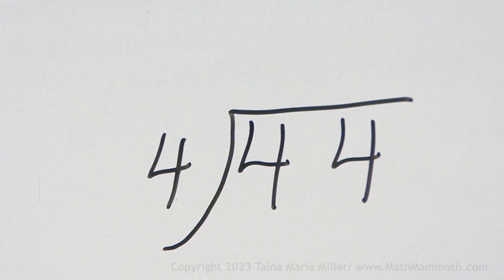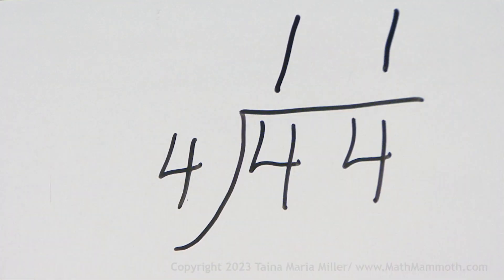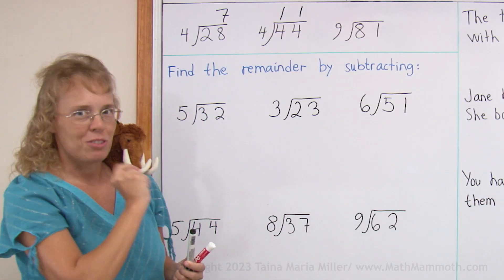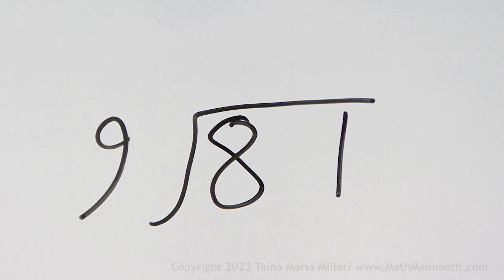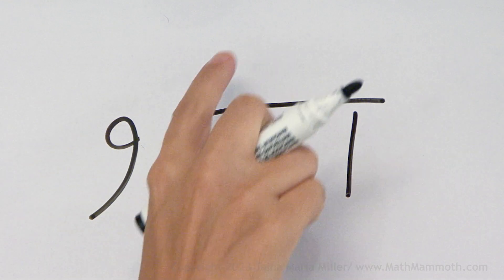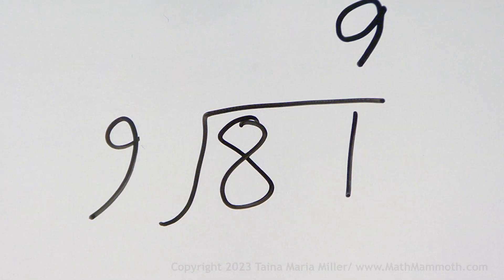And here we have 44 divided by 4, that's 11. And we write it like this, 11 right on top of the 44. Over here 81 divided by 9, the answer is 9. Don't write it on top of the tens digit here, but on top of the ones digit right there.